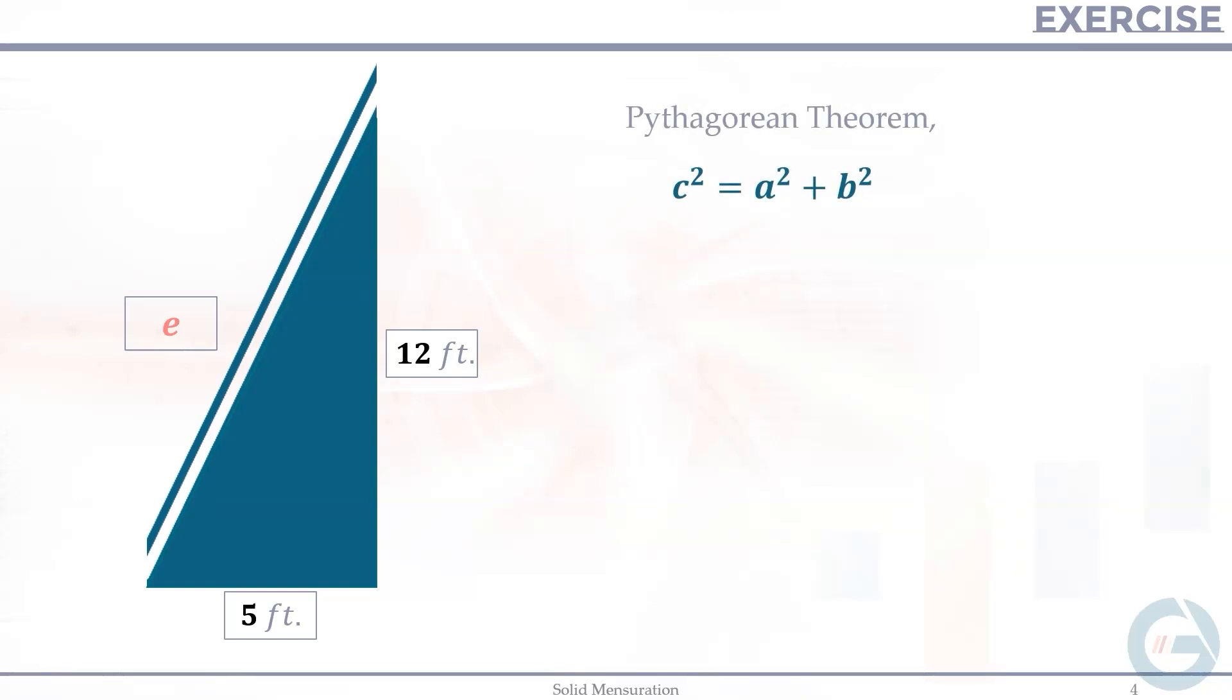And we'll be using, of course, the Pythagorean theorem. So we have c squared equals a squared plus b squared. So the hypotenuse is E. So E squared equals, let's say, the a is 5. So 5 squared plus 12 squared. So 5 squared plus 12 squared is 169.